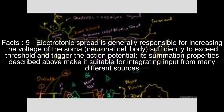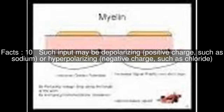Electrotonic spread is generally responsible for increasing the voltage of the soma — the neuronal cell body — sufficiently to exceed threshold and trigger the action potential. Its summation properties make it suitable for integrating input from many different sources. Such input may be depolarizing, such as positive charge like sodium, or hyperpolarizing, such as negative charge like chloride.